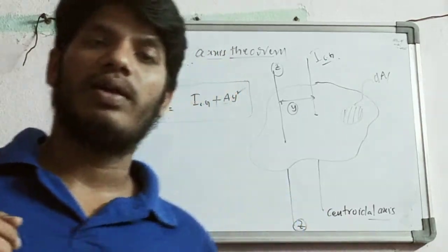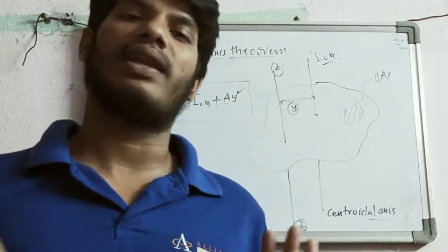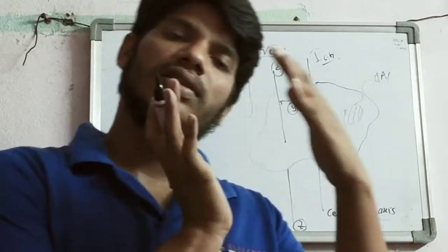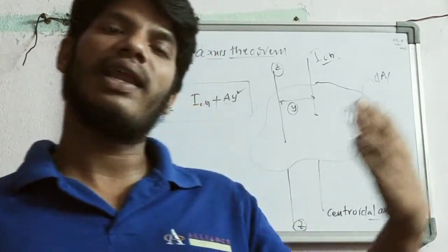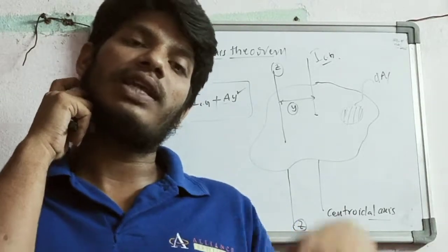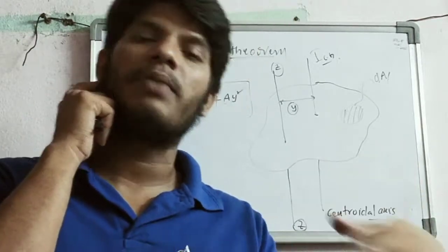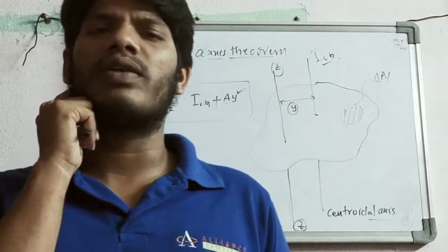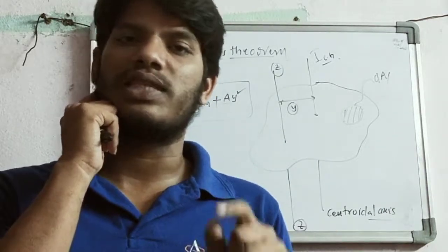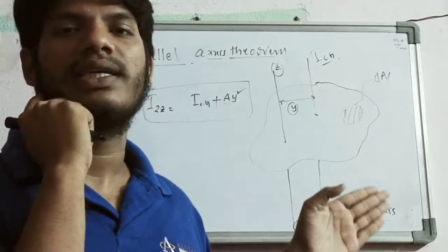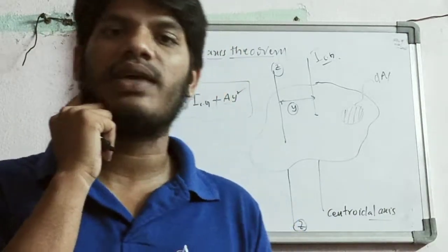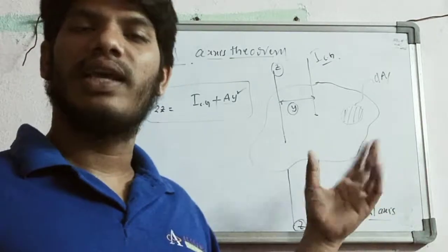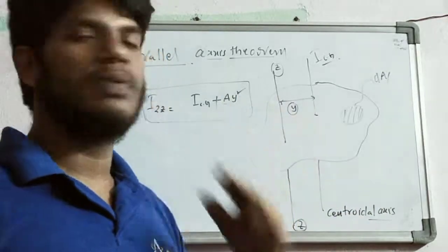To summarize both theorems: the perpendicular axis theorem states that if you want to find the moment of inertia about an axis perpendicular to two in-plane axes, it equals the sum of those in-plane moments of inertia — Izz = Ixx + Iyy. The parallel axis theorem states that if you want to find the moment of inertia about an axis not passing through the centroid, it equals the centroidal moment of inertia plus the area times the square of the distance between the two parallel axes — Izz = Icg + A × d².